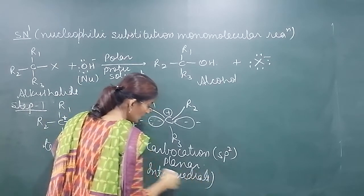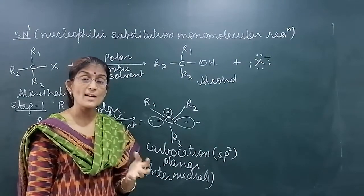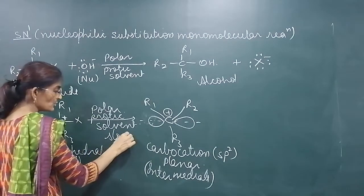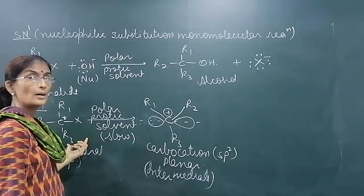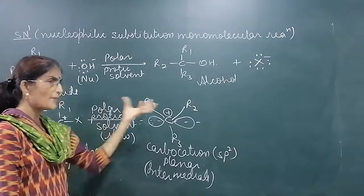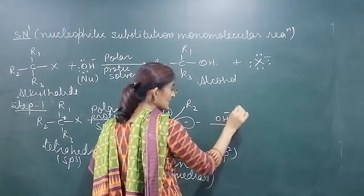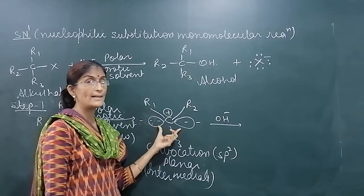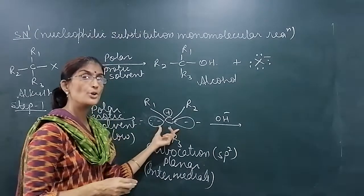As we know, the life of a carbocation is very small — it is hyperactive — so it will react fast with a nucleophile. The first step (carbocation formation) is the slow step, and we know that the slow step is always the rate-determining step. So the rate of the overall reaction depends only on the concentration of the alkyl halide; it won't depend on the concentration of the nucleophile, because the nucleophile attacks in the second step. When nucleophile OH minus attacks on the planar carbocation, it can attack from the top or from the bottom, so there are possibilities of two products.